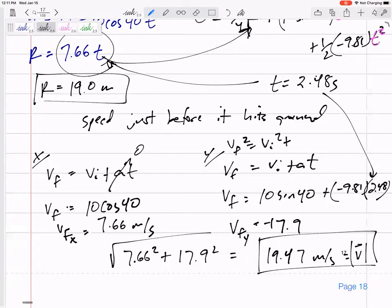And then, VF squared equals VI squared plus 2AD. We still should have gotten 17.9.